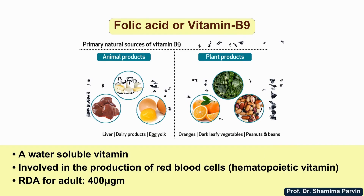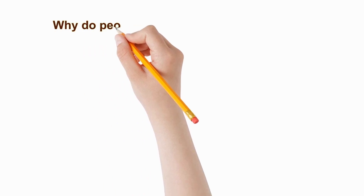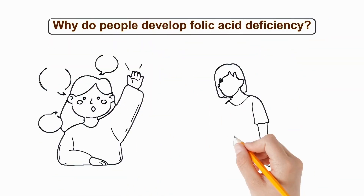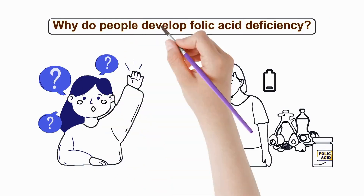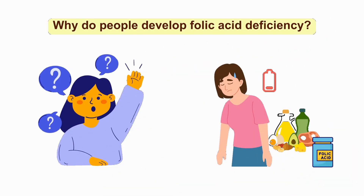The recommended dietary allowance is only 400 micrograms, which is quite low, and we get this vitamin from various plant and animal sources easily, or by taking folic acid supplements. So a common question may come to your mind: why do people still develop folic acid deficiency, although the dose is so low and it's so easily available from various sources?